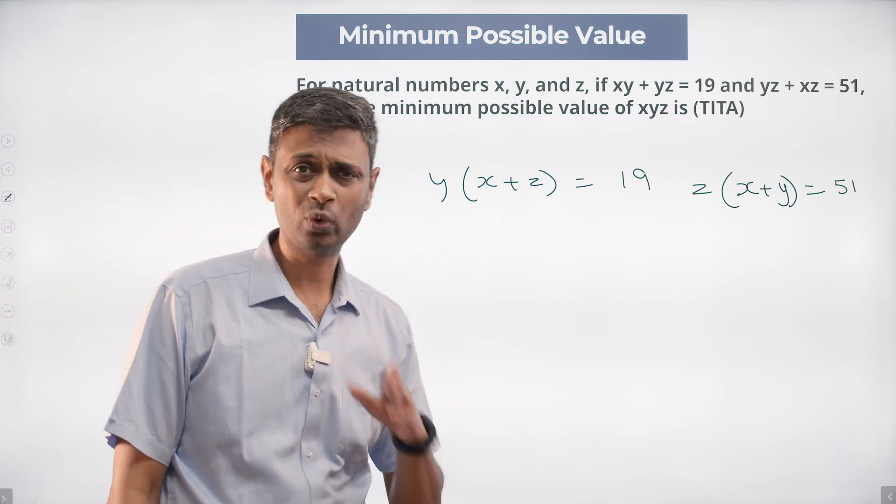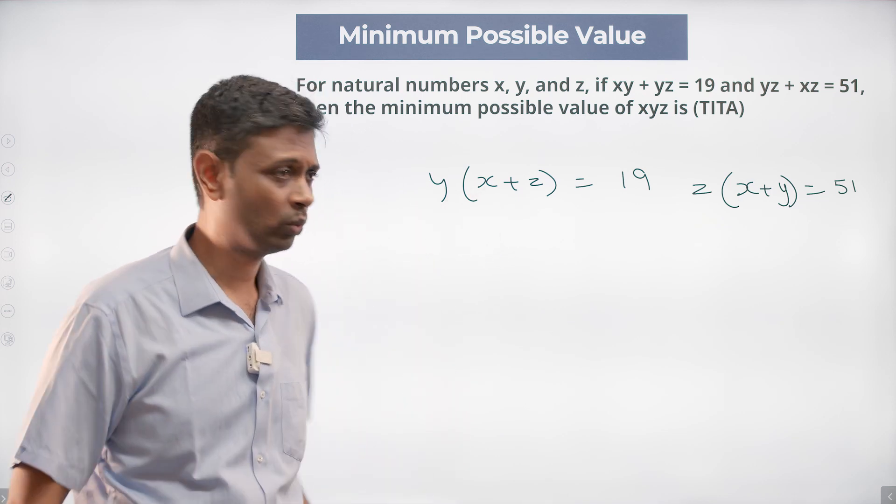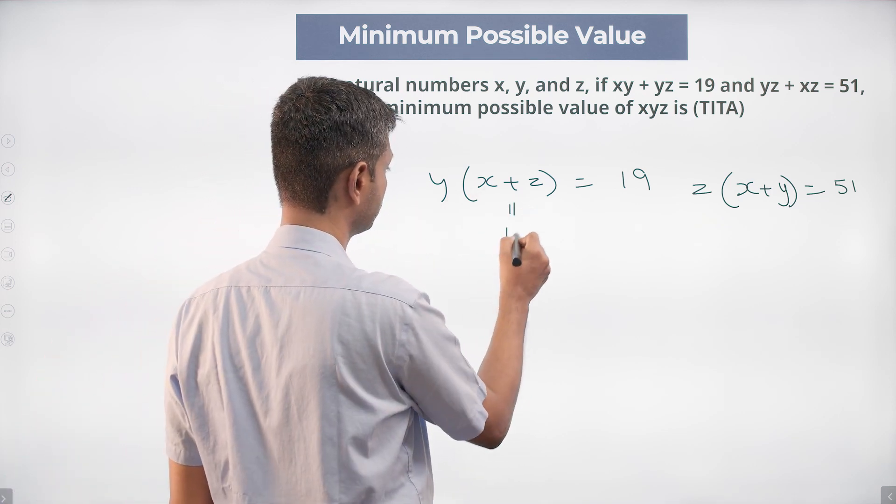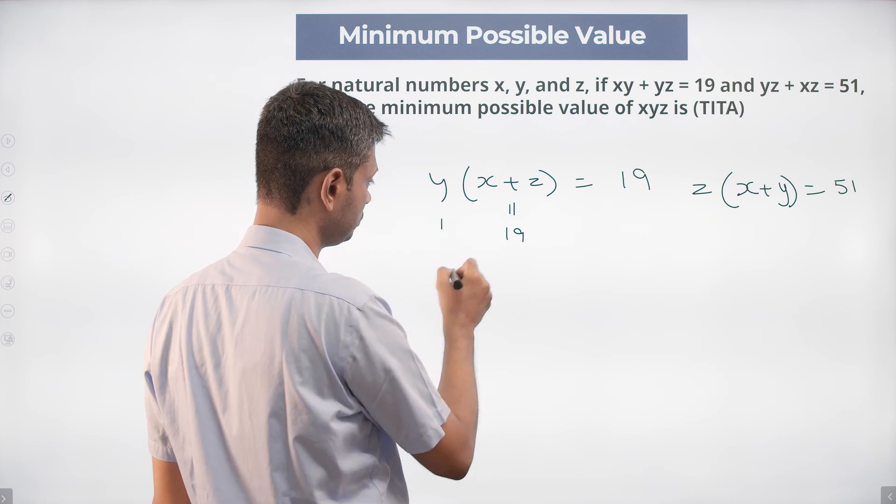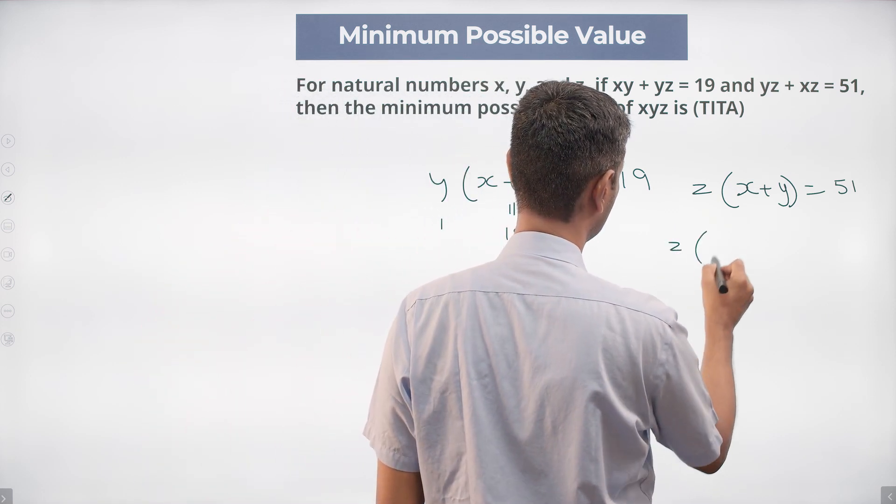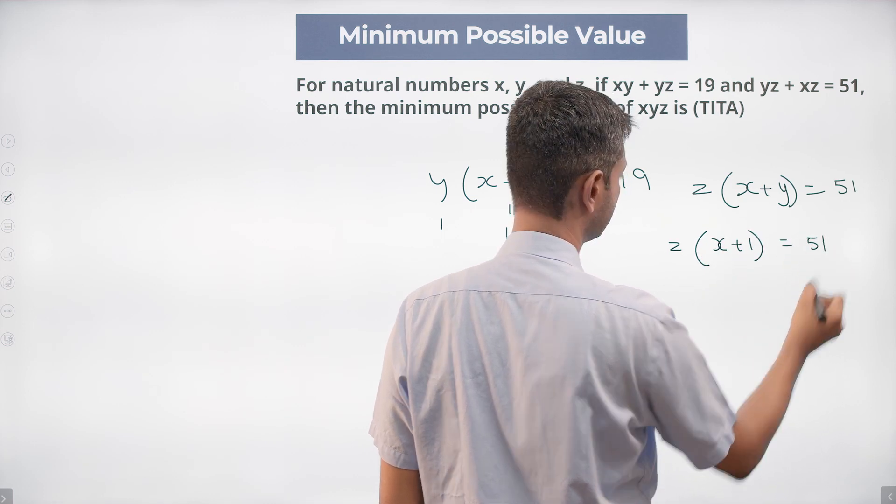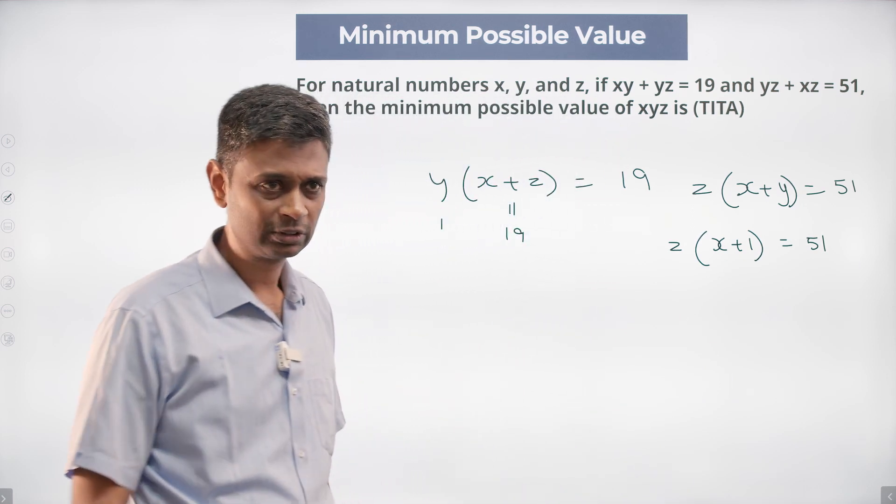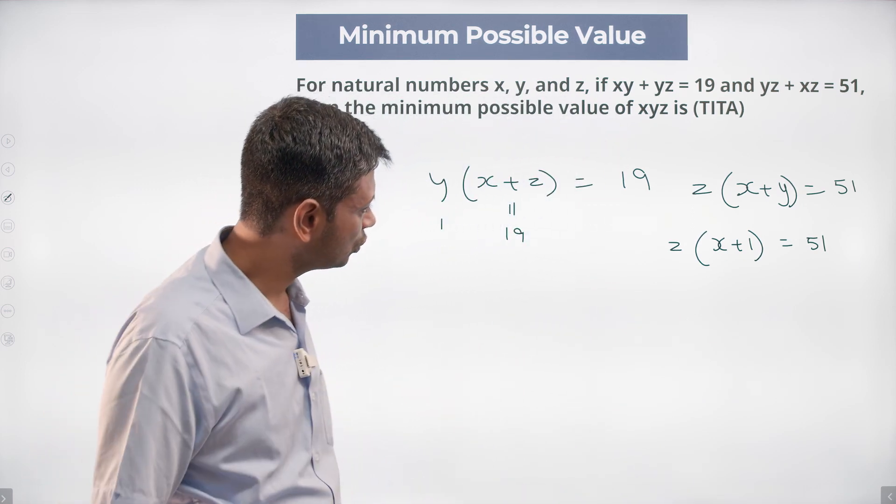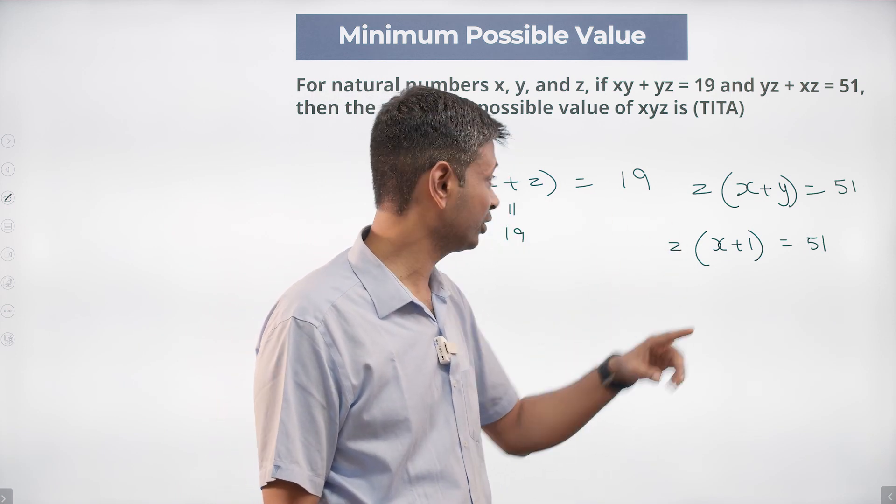19 can only be broken as 1 into 19 or 19 into 1. If x plus z is 19 and y is 1, plug that in here so z into (x+1). This is not 51 into 1, x cannot be 0. Not 1 into 51, x is not 50. That we know.